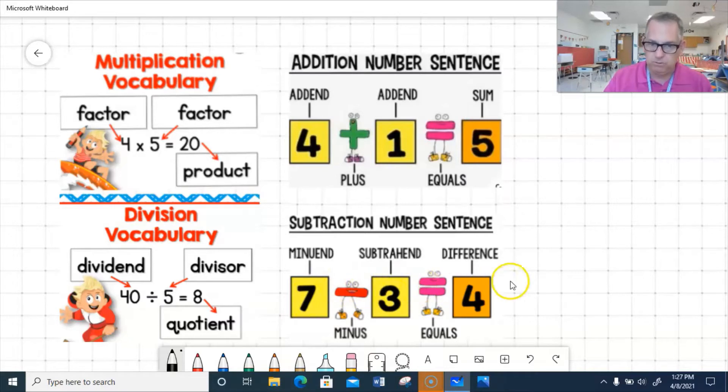Okay, but I cannot do the same thing with subtraction. The difference is the answer to a subtraction problem, and I cannot say that 3 minus 7 equals 4. That would not be a true statement. So, order matters when we're talking about division and subtraction. It doesn't necessarily really matter, or I'll still get the same answer. I'll still get the same product if I switch factors around, or I'll still get the same sum if I switch addends around.